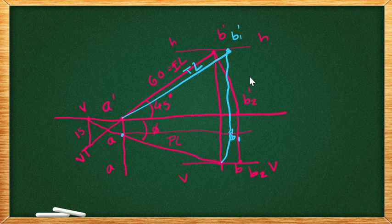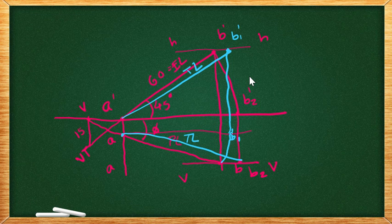Similarly, we can join a to this particular b2. Also, we have a true length in top view. And we can mark this is the horizontal trace. Horizontal trace. And here we have HT.